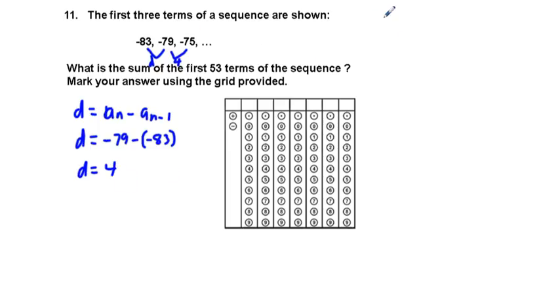Now we can do this the long way if we want to. We can just take negative 83 and add to that negative 79, add to that negative 75, and then negative 71. The next one is going to be negative 67, and keep on going until we have 53 terms total.